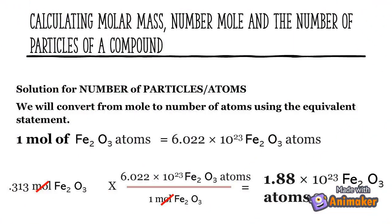Solution for number of particles: finding the number of particles is the same as finding the number of atoms. We will convert from moles of atoms to the number of atoms using the equivalent statement: 1 mole of iron(III) oxide is equal to 6.022 × 10²³ iron(III) oxide formula units.